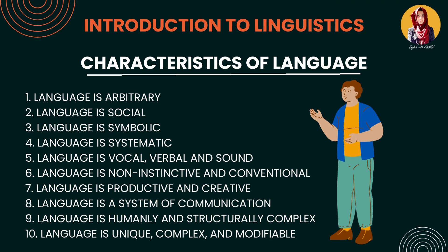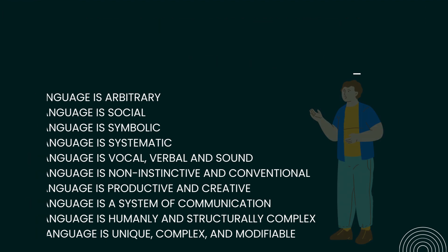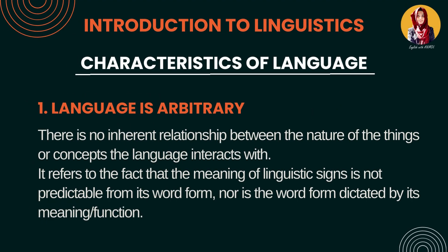The very first characteristic of language is: Language is arbitrary. Yeh hum peeche bhi discuss kar ke aa chuke hain ki hamare paas jo words hain, symbols hain, unke meanings kabhi bhi naturally unke saath associated nahi the — logon ne khud se perception banaya ki is word ke saath ye meaning associated hai. Toh yeh saari humanly creation hai, yeh human beings ne kiye hain. It's not natural.